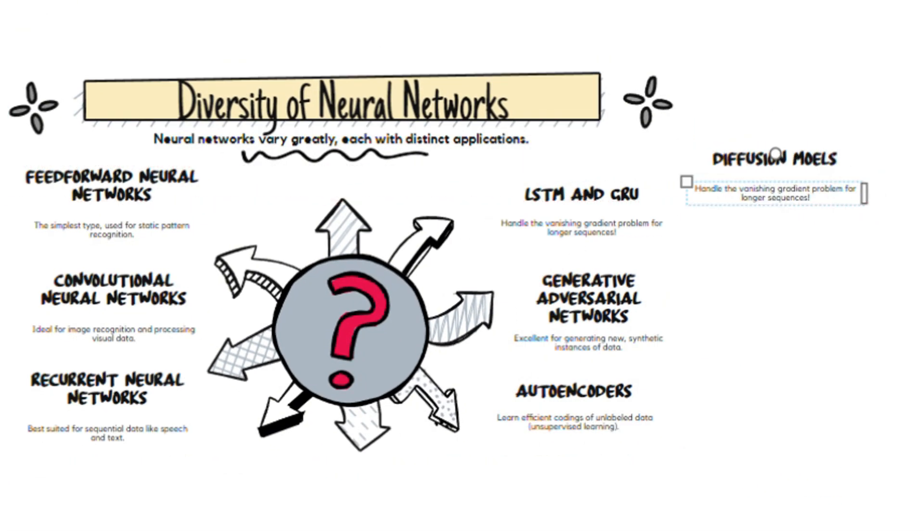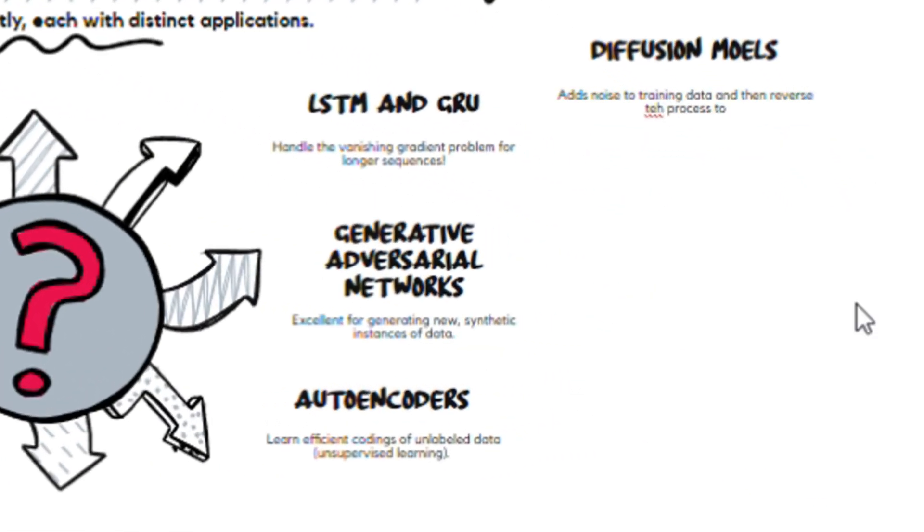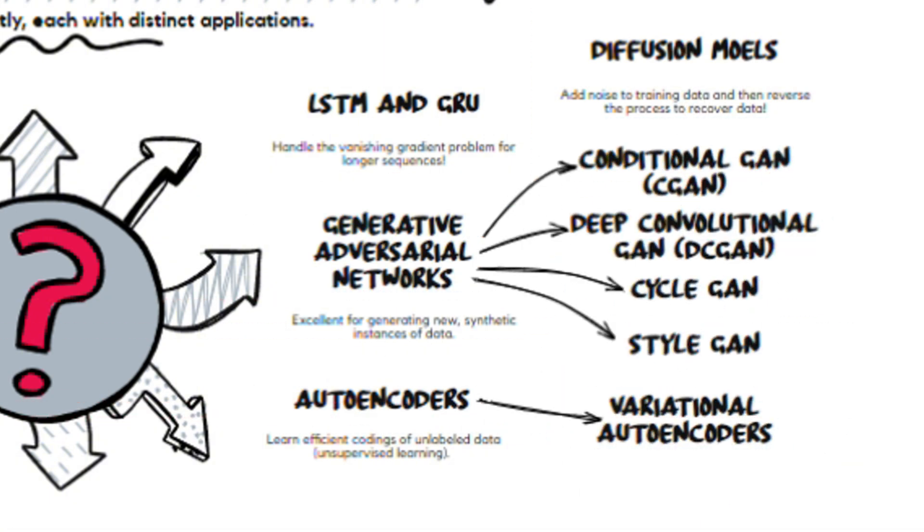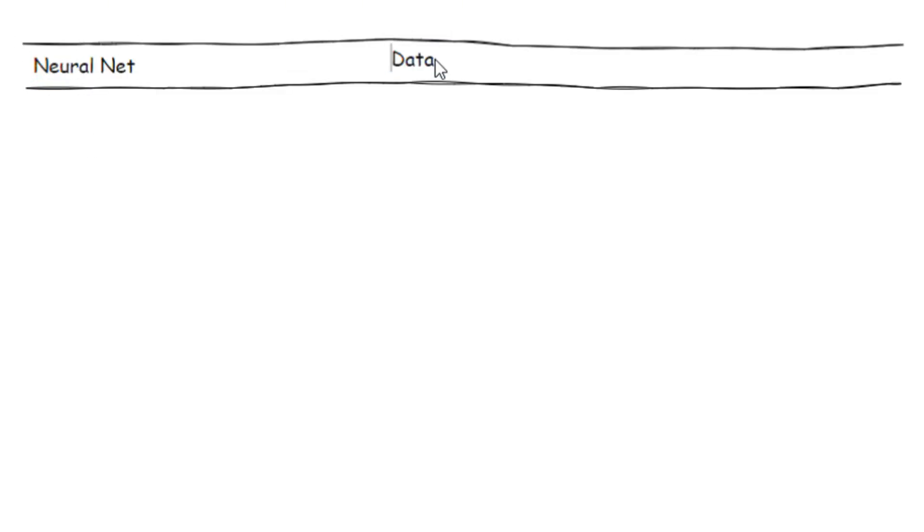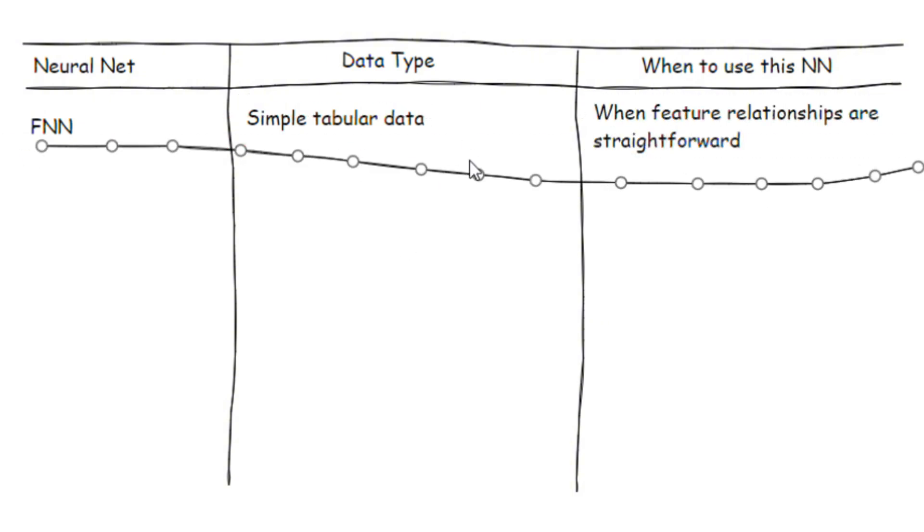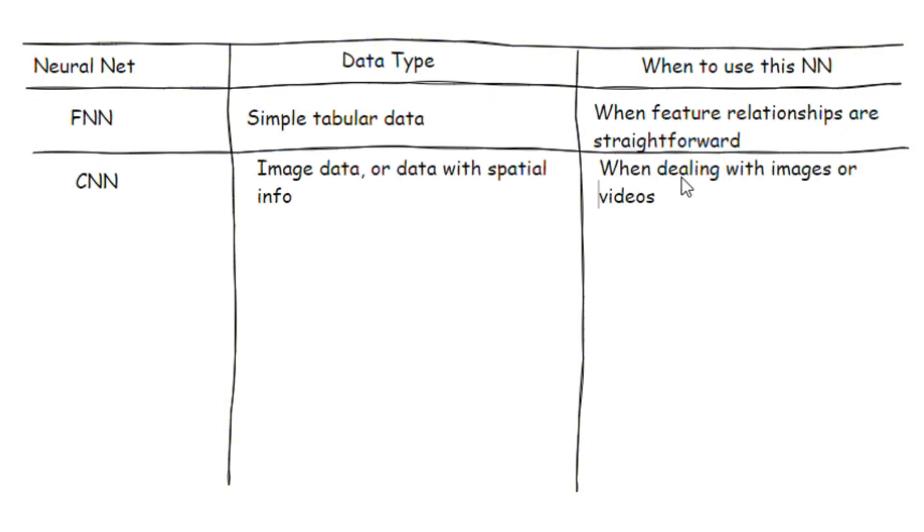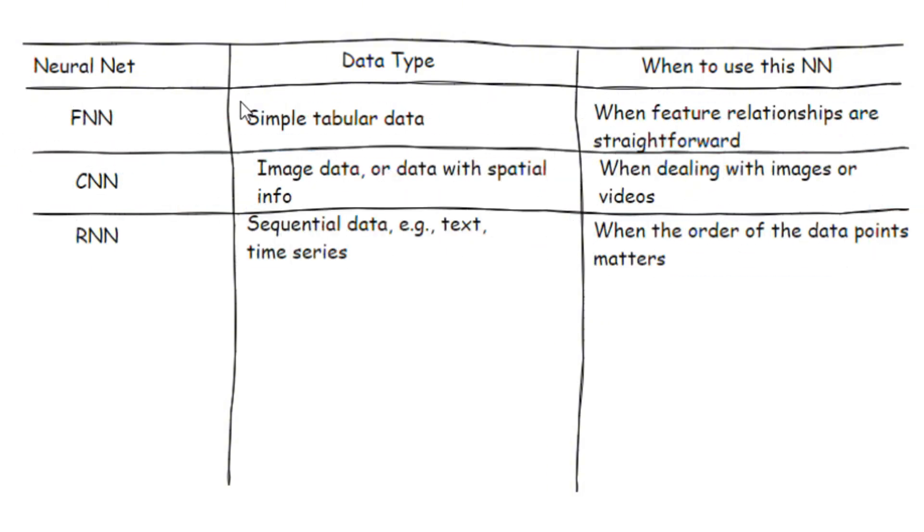There are many other types of neural networks. A few are diffusion models, variational autoencoders, and different variations of GANs. Choosing the right type of neural network for your task is essential for achieving optimal performance. Feedforward neural networks are great for simple tasks, while CNNs and RNNs are suited for more complex data structures like images and sequences.